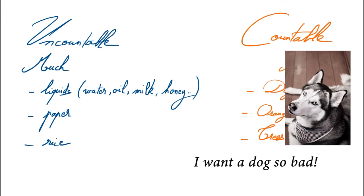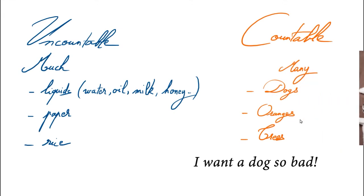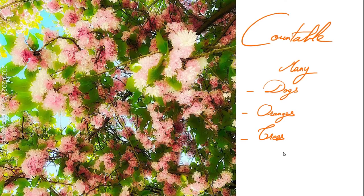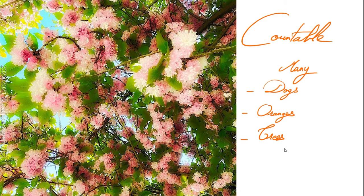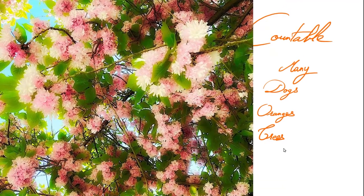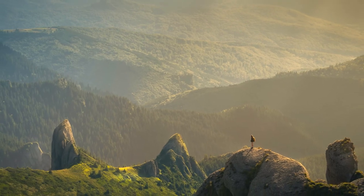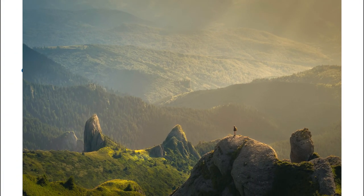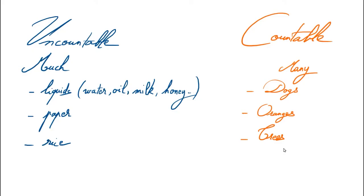Another example: ORANGE. You can say I HAVE MANY ORANGES. With TREES: THERE ARE SO MANY BEAUTIFUL TREES. I love nature — it is so rejuvenating to spend some quality time in it, don't you think?